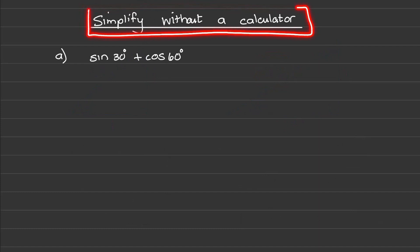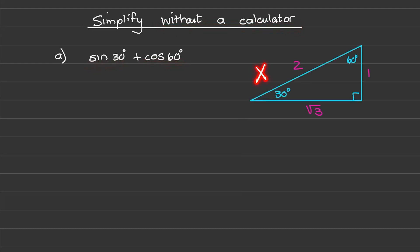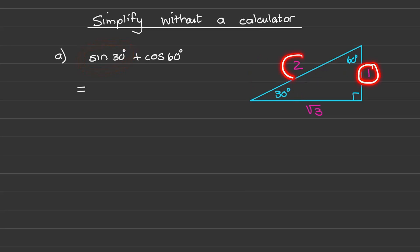Let us do a few examples where we will simplify expressions without the use of a calculator. First, we have sine of 30 plus the cos of 60. The special triangle I need to use is the one with 30 and 60 degrees in it. From the special triangle, we know that the sine of 30 is 1 over 2, which is a half, and the cos of 60 is 1 over 2 as well. A half plus a half is equal to 1.